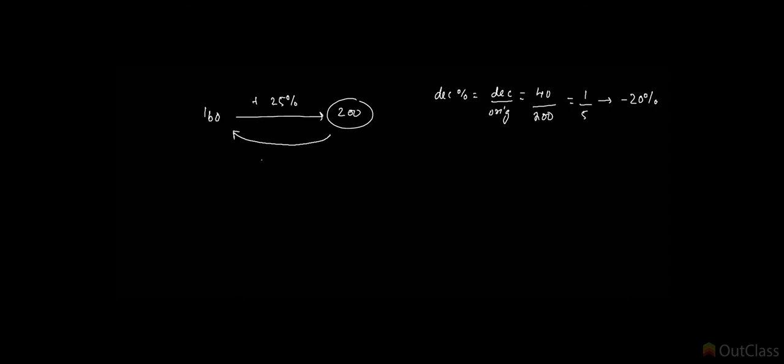So a 25% increase, if you have to negate it using a percentage decrease, it's going to be 20%. Two questions arise at this point. One is, why are these numbers different? Two is, can you quantify and possibly formalize this?